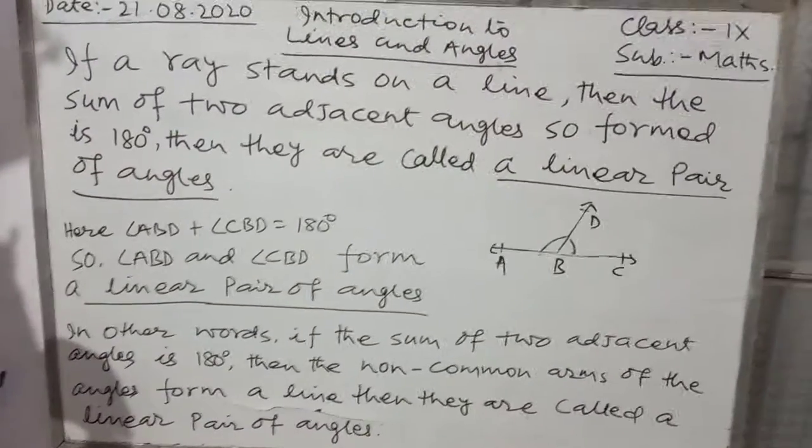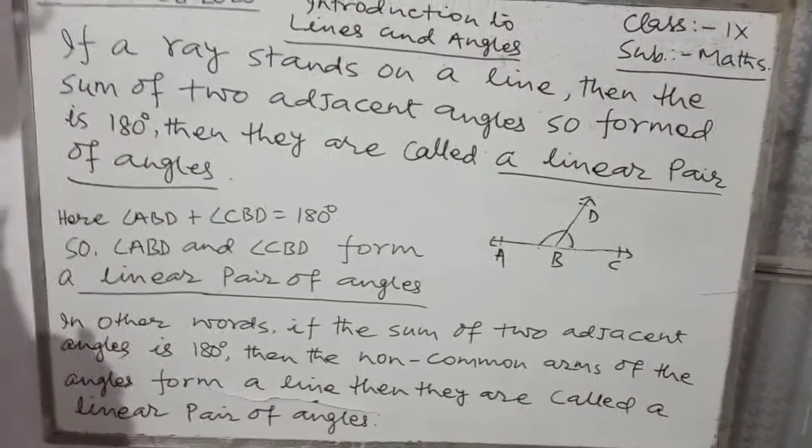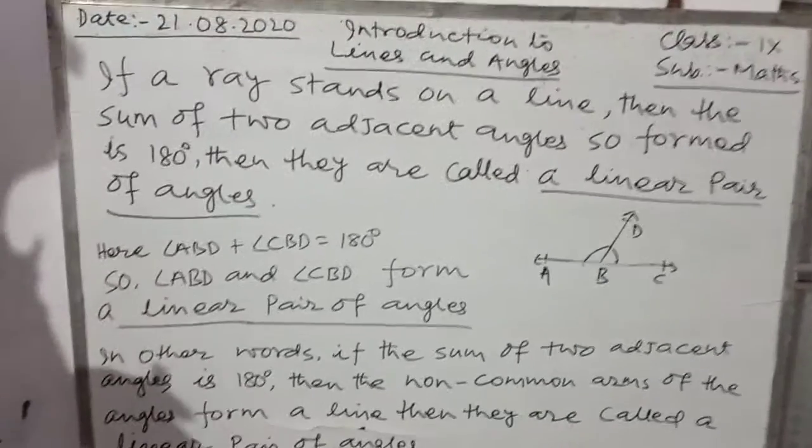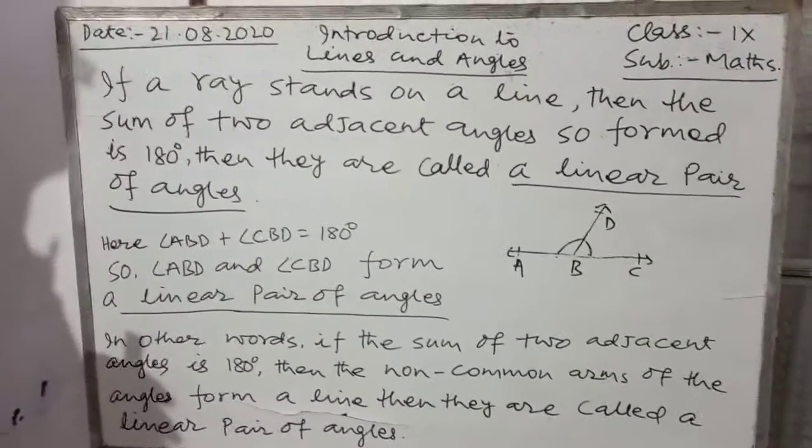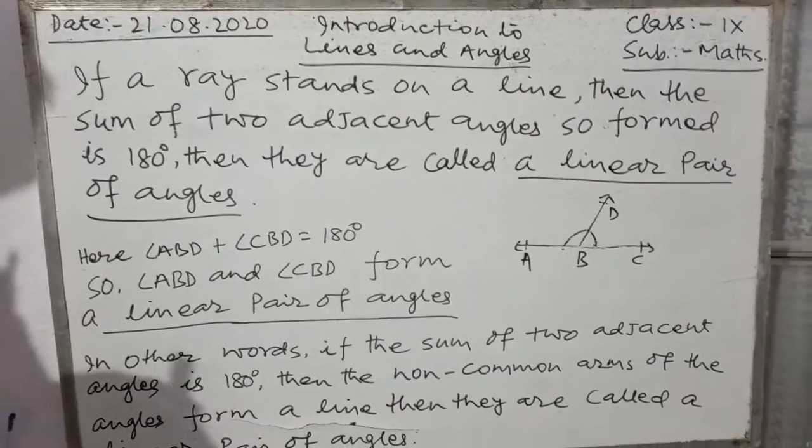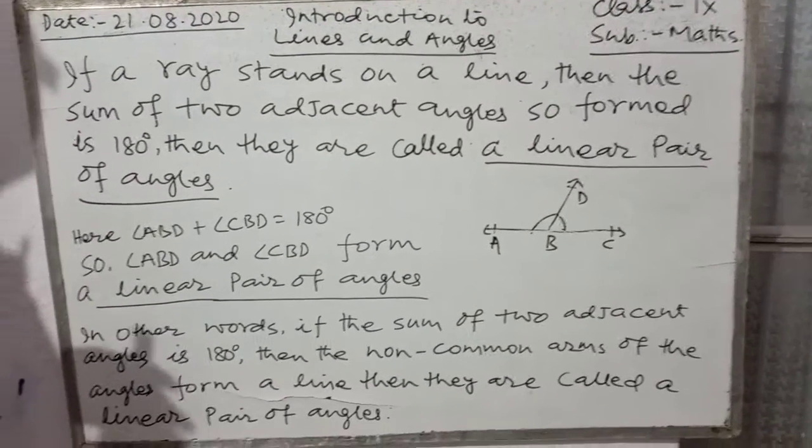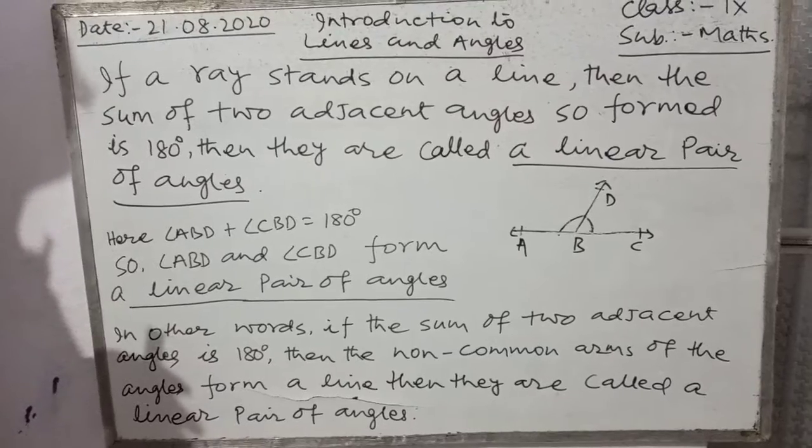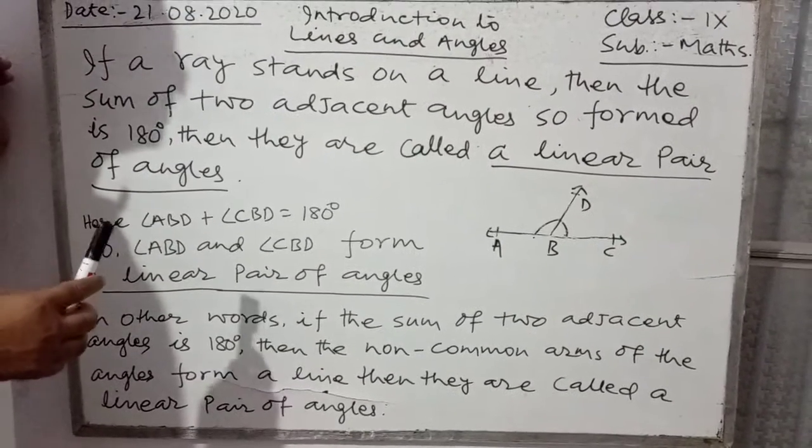Good morning students, a linear pair of angles kya hota hai? If a ray stands on a line, then the sum of two adjacent angles so formed is 180 degrees, then they are called a linear pair of angles.